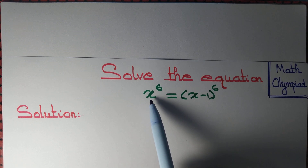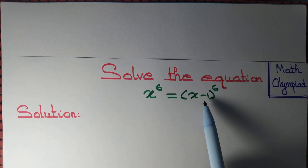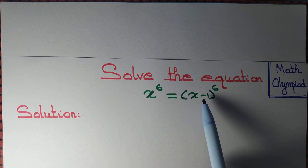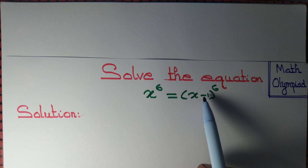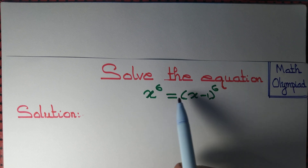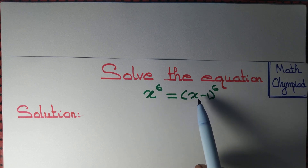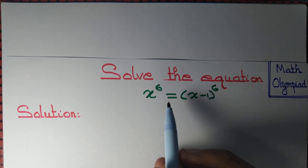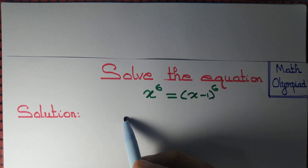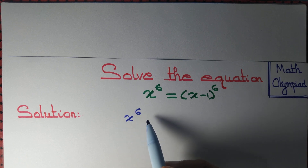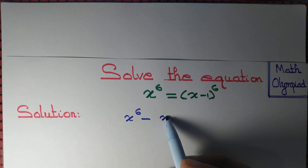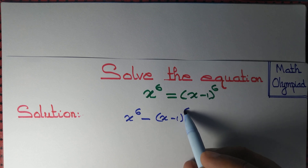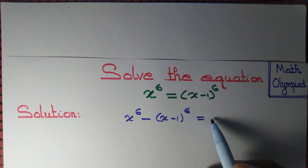Let us solve the equation x to the power 6 equal to x minus 1 to the power 6. You may think of expanding x minus 1 to the power 6 and then cancelling x to the power 6. However, it is much easier if you simply write this equation as x to the power 6 minus x minus 1 to the power 6 equal to 0.